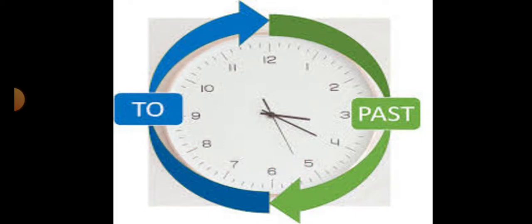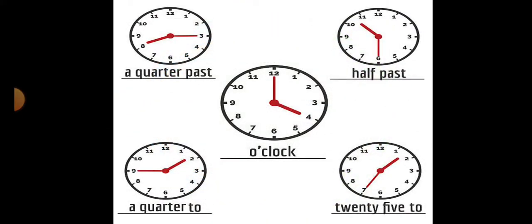For example, first clock is having, you will say it is half past 10. In this you will say it is 25 to 2. Here you will say it's quarter to 2. Here you will say it's quarter past 8, and here you will say it's 4 o'clock.